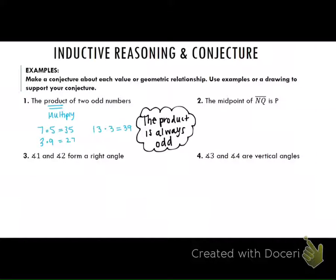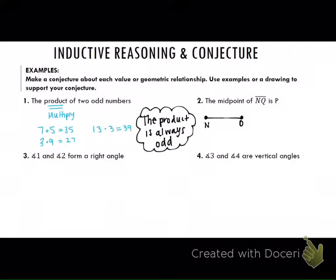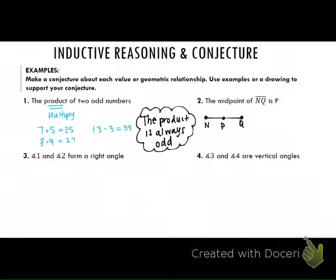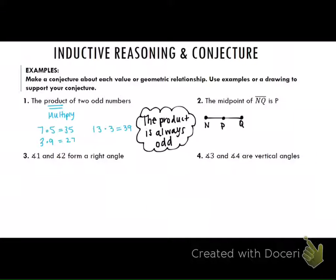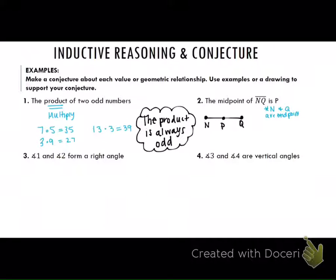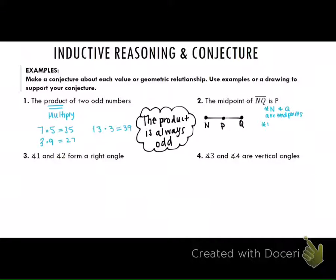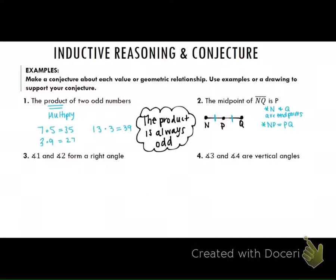The midpoint of NQ is P. What is something I know if P is the midpoint? N and Q are endpoints — that's one conjecture. There's multiple ones. Another thing: NP equals PQ, it's in the middle. What can you say about P? P is between N and Q.